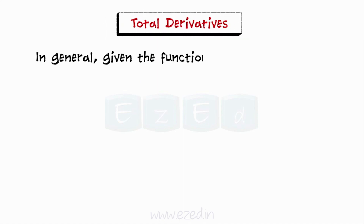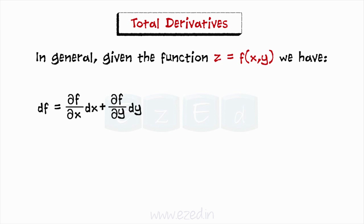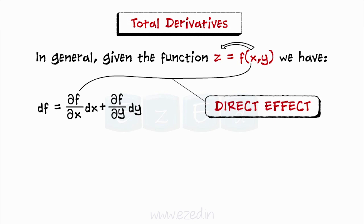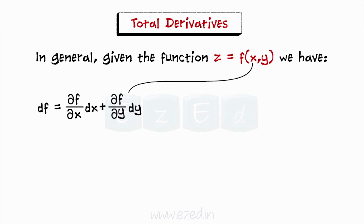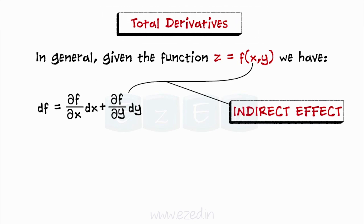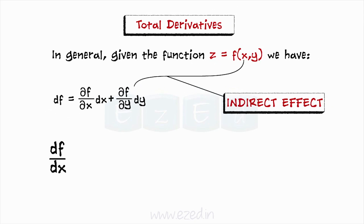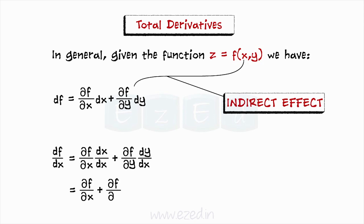In general, given the function z equals f(x, y), we have dF equals del F by del x times dx plus del F by del y times dy. The key advantage of the total derivative is that it takes variable interaction into account. The partial derivative del F by del x examines the effect of x on z if y doesn't change — this is the direct effect. However, if x affects y which then affects z, we might want to measure this indirect effect. Dividing throughout by dx, we get dF by dx equals del F by del x plus del F by del y times dy by dx. If x and y are unrelated, del y by del x equals zero and the total derivative collapses to the partial derivative.